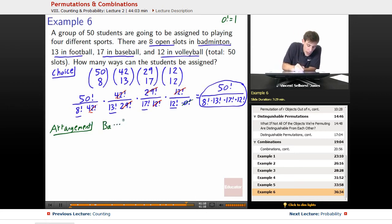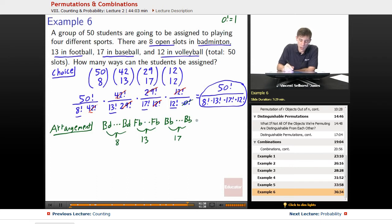So there is a badminton card, and we have a total of eight badminton cards. Let's make that BD, because it's kind of hard to tell the difference between badminton and baseball if they both have a B. So BD are badminton cards. And then we've got our football cards. How many football cards do we have? We've got 13 football cards. How many baseball cards do we have? We've got 17 baseball cards. And then we've got 12 volleyball cards.